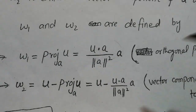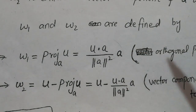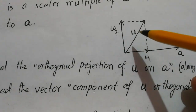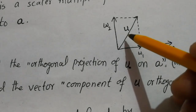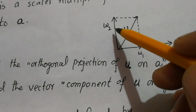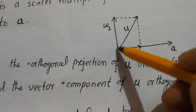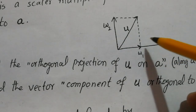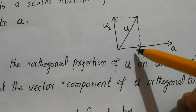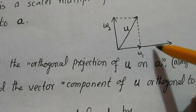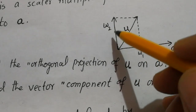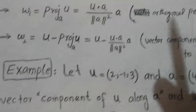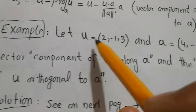One is the projection theorem and the formula for the projection written here. The projection is the component: if the vector is u and it has a shadow w1 on a, and another shadow w2 perpendicular to a, then w1 is the projection along vector a and w2 is the projection of u perpendicular to a.